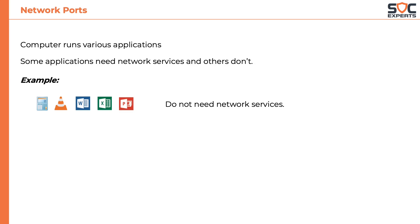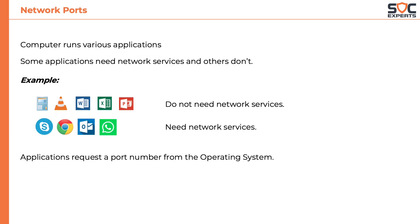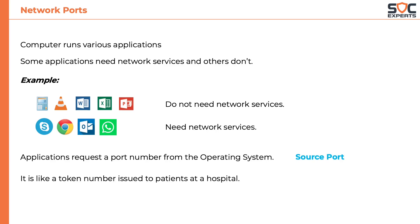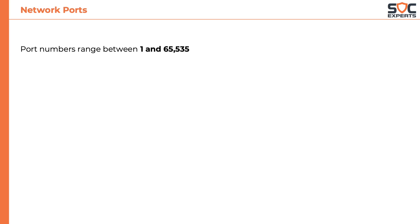On the other hand, applications like Skype, Chrome, Outlook, WhatsApp, etc. need network services. Any application that needs to use network services will request a port number from the operating system — this is called a source port. It is like a token number issued to patients at a hospital. Unlike a token number which is issued serially, port numbers are randomly generated by the operating system. Port numbers range between 1 and 65535.